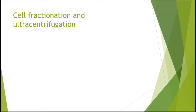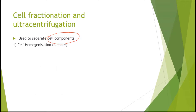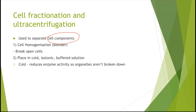Cell fractionation and ultracentrifugation are used to separate cell components and organelles, based on density. The first step is cell homogenization — using a blender to break open the cell. The homogenized components are then placed into a cold, isotonic, buffered solution. Cold reduces enzyme activity so organelles aren't broken down; reducing temperature reduces enzyme activity.